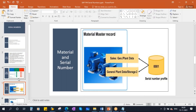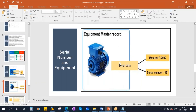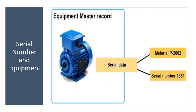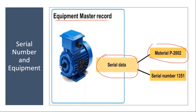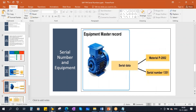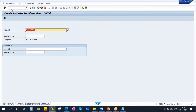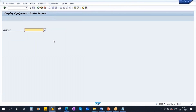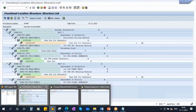So this is how you create equipments with serial number. When you create equipment with serial number, in the equipment master there is a tab called Serialization Data tab - in that you can see its material code and you can see its serial number. Now I will show you this in the system. Let us go to IE03.